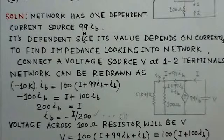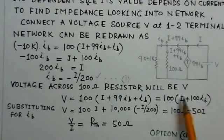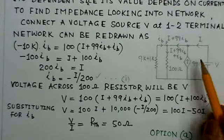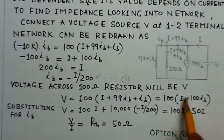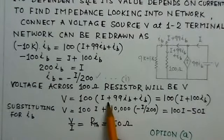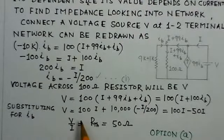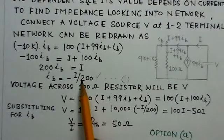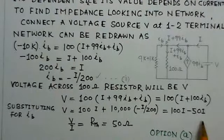Now we can see that the voltage across the 100 ohm resistor will be V, since this voltage is the same as the voltage across the 100 ohm resistor because they are in parallel. So V equals 100 into the current, which is I plus 99 IB plus IB. Substituting the value for IB from equation 1, V equals 100 times I plus 10K times minus I over 200. Solving this gives the value of V by I.